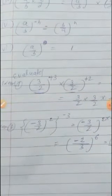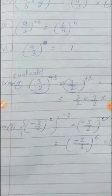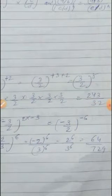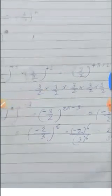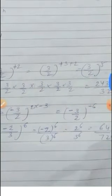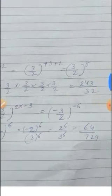Next example: ((-3/2)^2)^(-3). First, multiply both powers: (-3/2)^(2×(−3)) = (-3/2)^(−6). Then take the reciprocal: (-2/3)^6. That equals (-2)^6 / 3^6. Here, -2 is raised to an even power, so the negative becomes positive: 64/729.